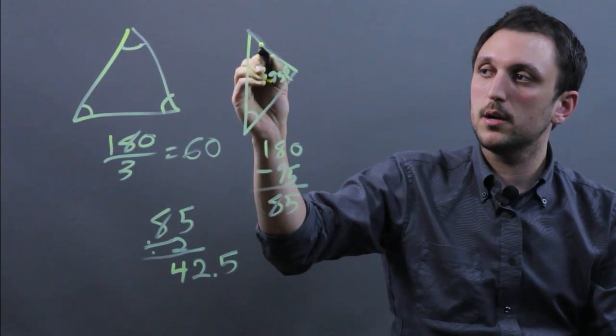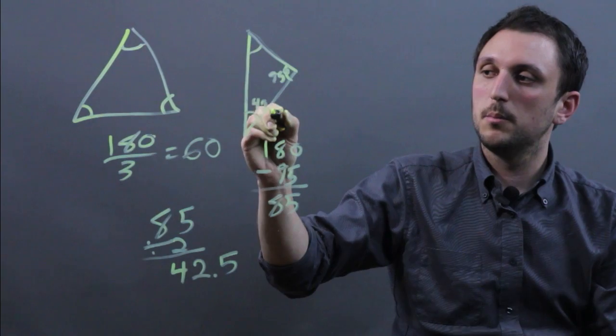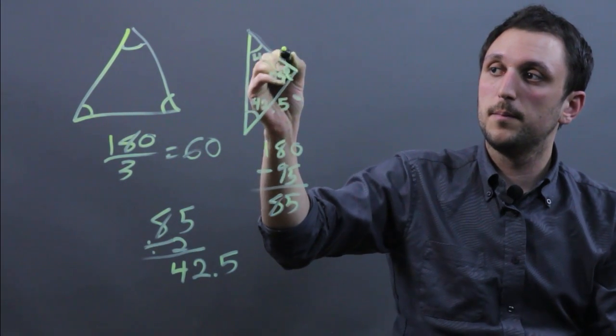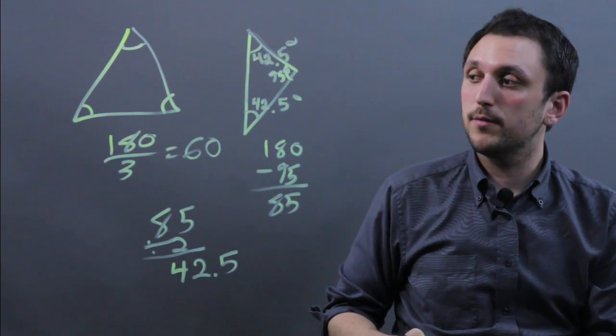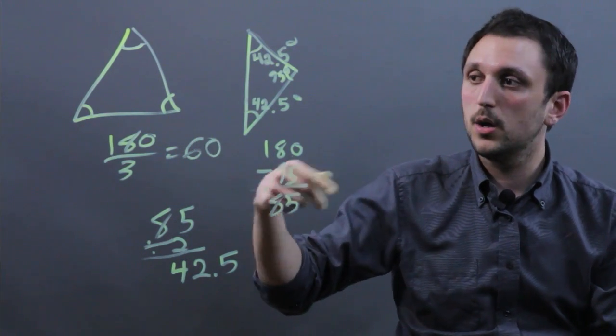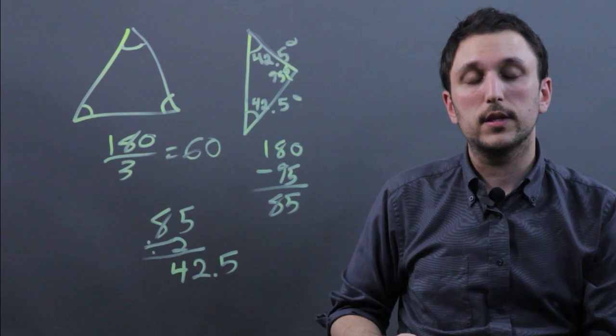So here and here are going to be 42.5 degrees. So I'm Charlie Kasov and you just learned some help with finding the measure of an equilateral triangle and the measure of an isosceles triangle. Thanks a lot.